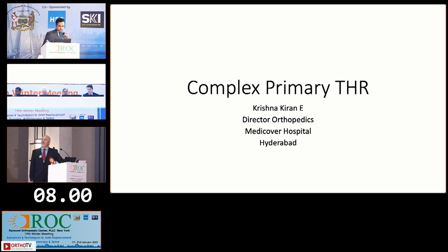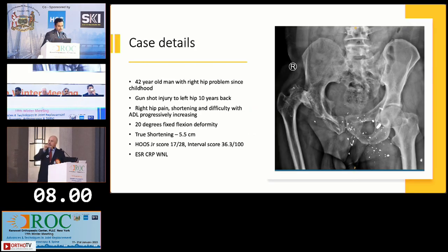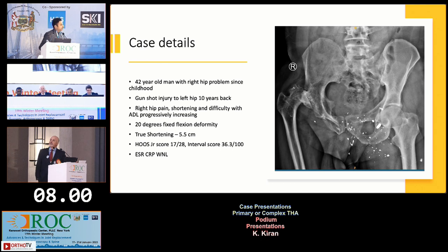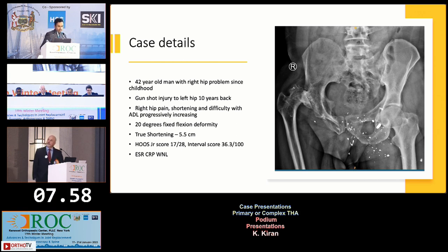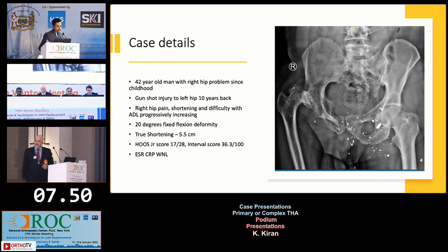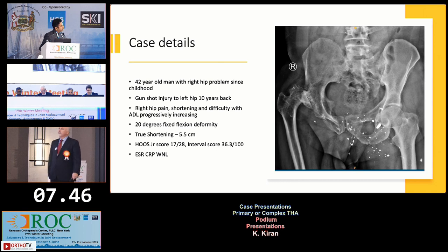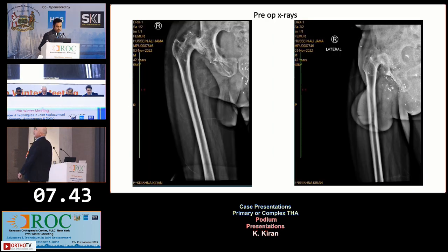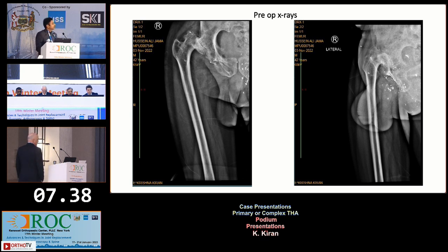Good evening. This is a 42-year-old man with right hip problems in his childhood. He also had a gunshot injury to the left hip around 10 years back, which had nothing to do with the right hip pathology. He had right hip pain, shortening, and difficulty with activities of daily living, progressively increasing. He had 20 degrees of fixed flexion deformity with a true shortening of 5.5 centimeters. ESR and sed rates were normal. These are his AP and lateral X-rays.